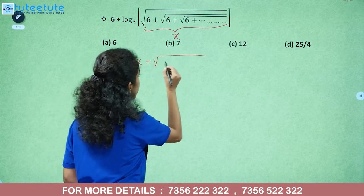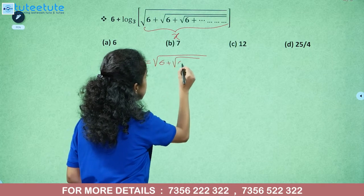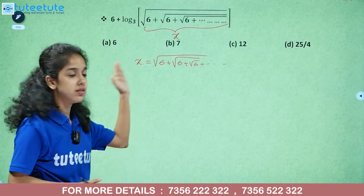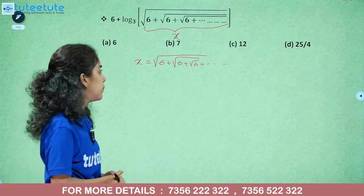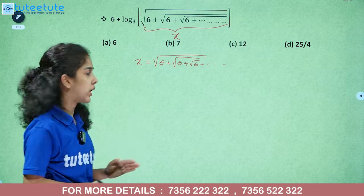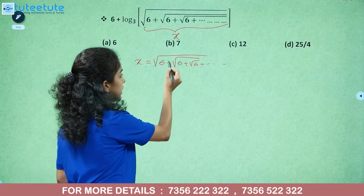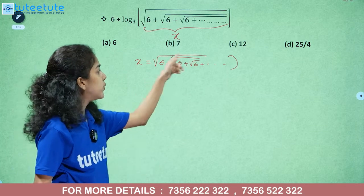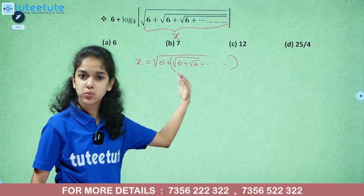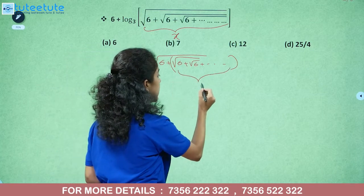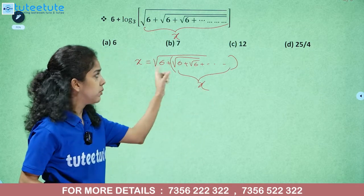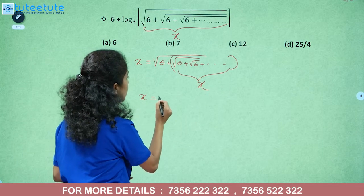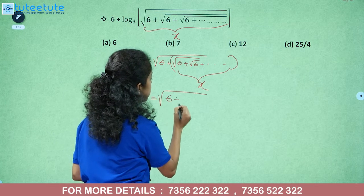The expression inside is: root of 6 plus root 6 plus root 6, and so on — this is the infinite nested radical. We let this equal x. So x equals root of 6 plus x, because the pattern repeats.